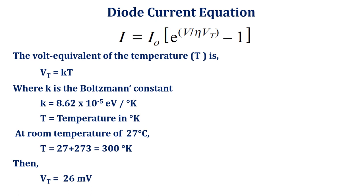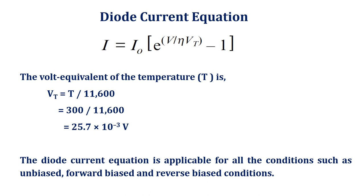The Vt can also be expressed as Vt equals T divided by 11,600.